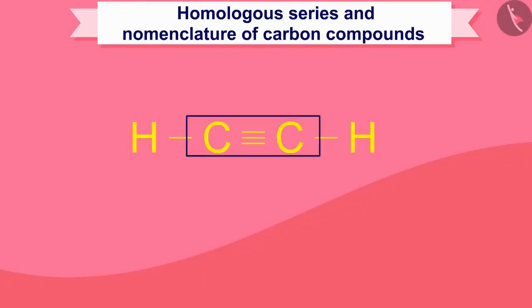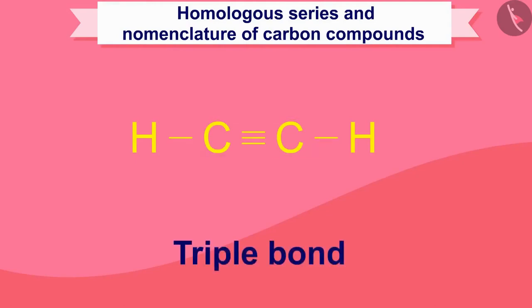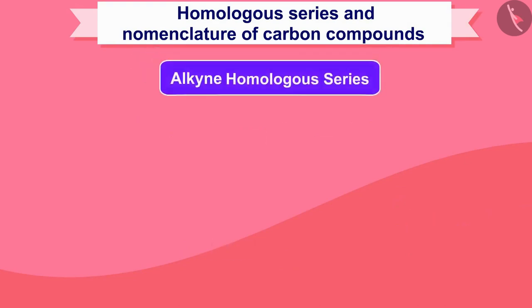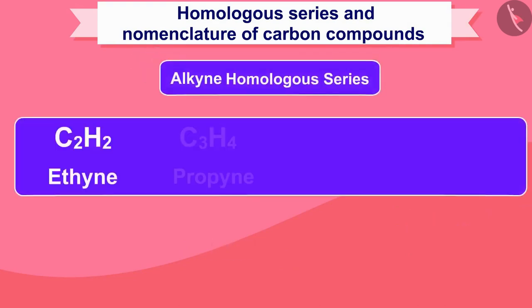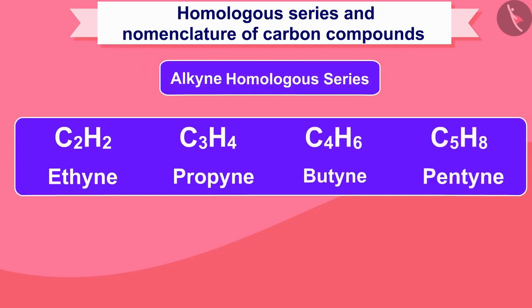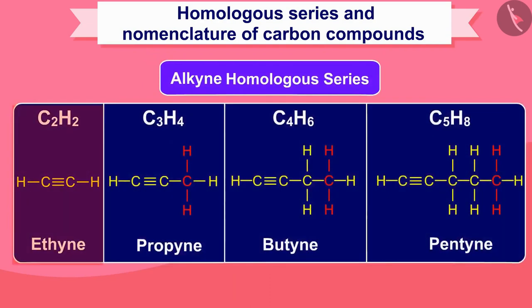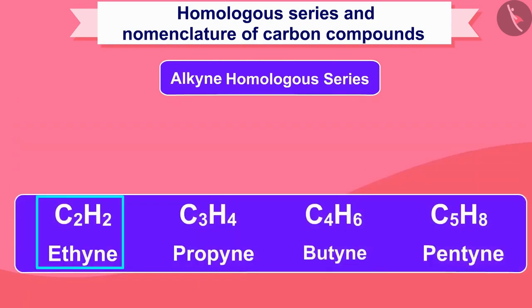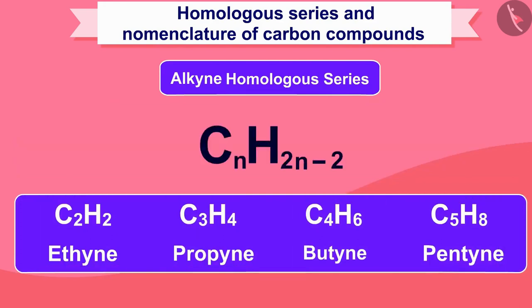Similarly, if the hydrocarbon compound contains a carbon-carbon triple bond, the series is called alkyne. The name ends with '-yne'. There is also a difference of CH2 unit in moving from one member to another, and we can represent any compound in this series by the formula CnH(2n-2).